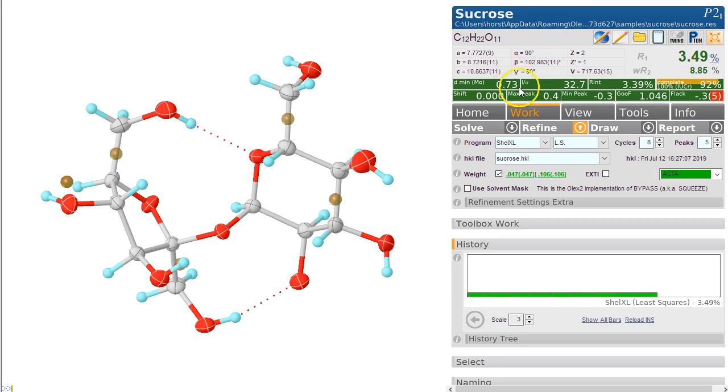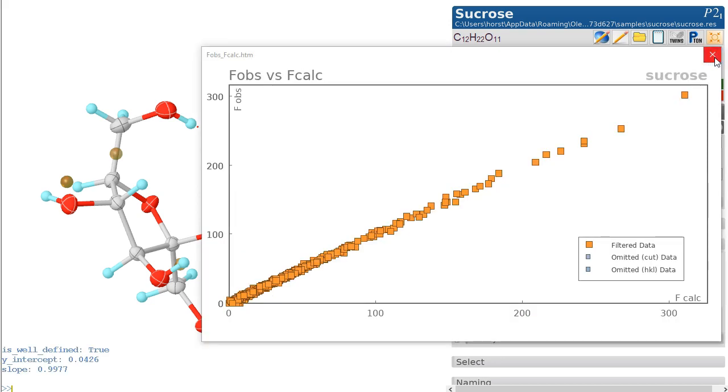Sucrose nearly done. Let's check everything's green and we've got an R-factor of 3.49 percent. Click on the F-obs F-calc plot - you may just about see that this curves this way now.